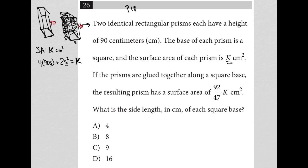2s squared because s squared represents the area of the square, so that's one of the bases. But we have a square on top and on bottom in terms of surfaces. So that's why we have 2s squared. So K is equal to 360s plus 2s squared.